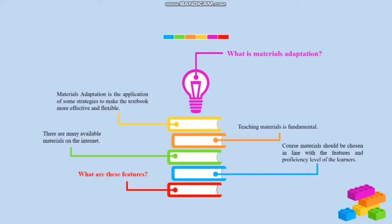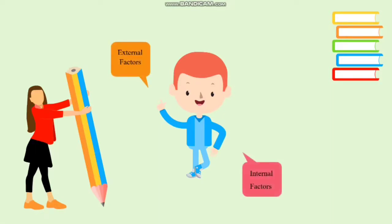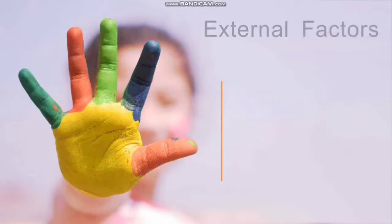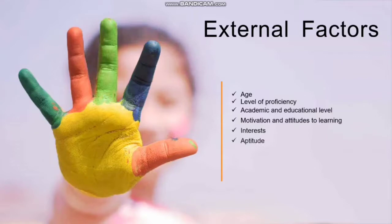What are these features? There are two categories: external factors and internal factors. Here are some external factors: age, level of proficiency, academic and educational level, motivation and attitude to learning, interests, aptitude, mother tongue, preferred learning styles, and personality.